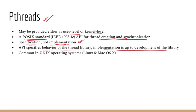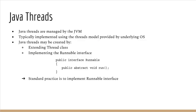PThreads is a specification, not an implementation. That means the thread library specifies what functions should be available, but the implementation of those methods is totally up to the developers. That's why it says the API specifies the behavior of the thread library; implementation is up to the developer. PThreads is very common in Unix operating systems.